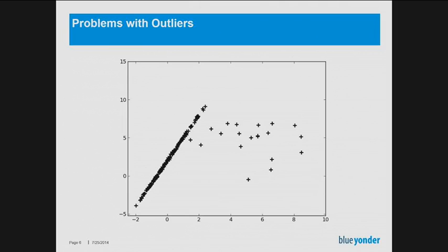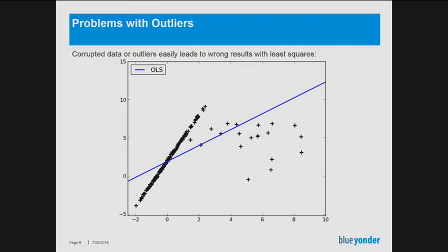But what do you do in a 10-dimensional space? You can't just look at a plot to identify outliers — you need complicated preprocessing to eliminate them. If you just apply ordinary least squares on data with outliers, you get completely wrong results. The line gets pulled toward the outliers, when what you really want is a line through the dense cluster of points.